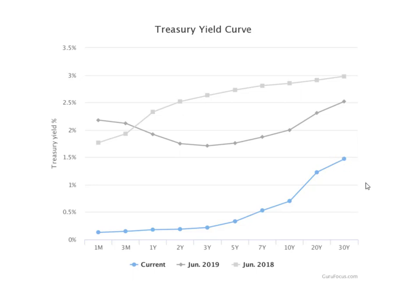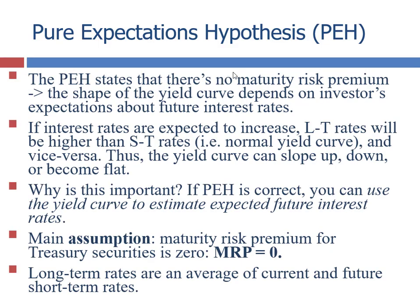There's a theory called the pure expectations theory that tries to explain, based on the following assumptions, that there's no maturity risk premium — meaning the yield curve doesn't depend on a risk premium, but rather it's investor expectations that move the future rates. In other words, it's not the maturity risk premium that makes the upward sloping curve.